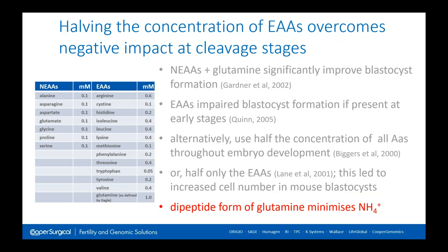Looking at amino acids, the table shown here illustrates the concentration of amino acids used in Eagles medium, the historical medium that was the basis of early experiments on amino acids in embryo culture. Work by David Gardner and colleagues in the early 2000s showed that non-essential amino acids with glutamine significantly improved the formation of blastocysts. However, Patrick Quinn also showed that adding essential amino acids at early cleavage stages caused blastocysts to form less readily. It should be noted that the terms 'non-essential' and 'essential' amino acids really refer to somatic cell culture and are not particularly relevant to embryos.